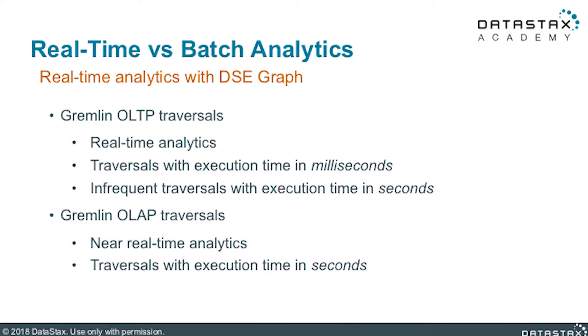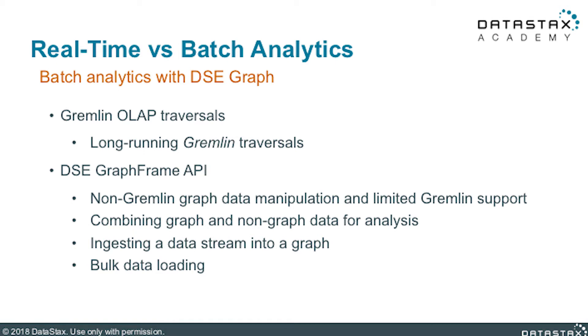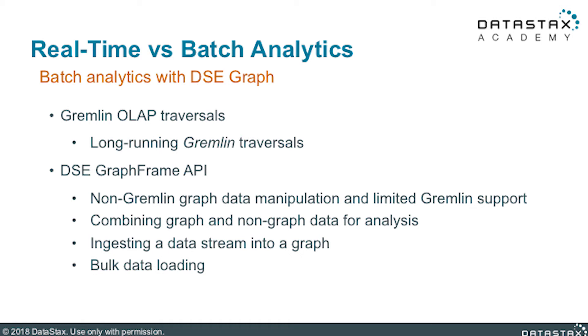In DSC Graph, in some cases, real-time analytical steps can be implemented using Gremlin OLTP traversals, with response times measured in milliseconds, or in case of infrequent traversals, in seconds. Alternatively, one can implement near real-time analytics in DSC Graph using Gremlin OLAP traversals, expecting a response time in seconds. Batch analytics would always rely on DSC Graph OLAP capabilities — those are Gremlin OLAP traversals and DSC Graph frames. The two approaches complement each other. Gremlin OLAP traversals are automatically translated into Spark code and executed as Spark jobs, suitable for long-running, computationally and memory-expensive traversals. DSC Graph frames, while also having limited support of Gremlin, are most valued for their ability to perform non-Gremlin graph data manipulation via Spark, combining graph and non-graph data for analysis, ingesting a data stream into a graph, and bulk data mutations.